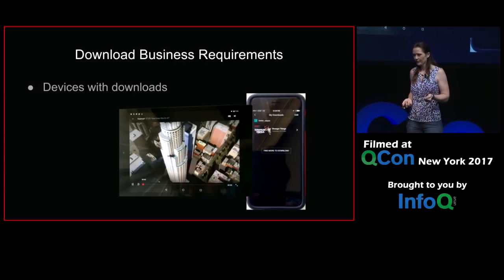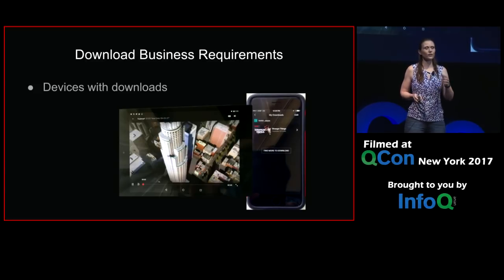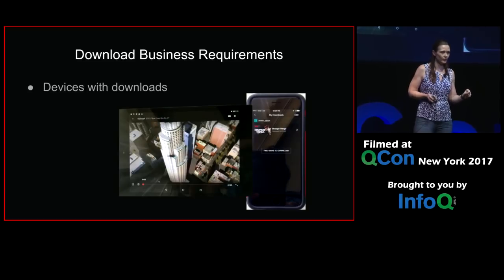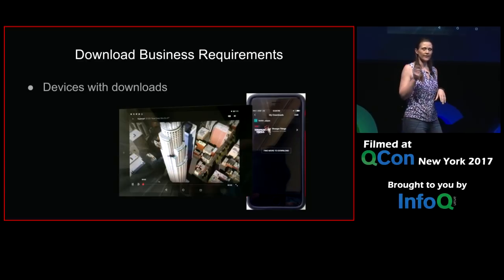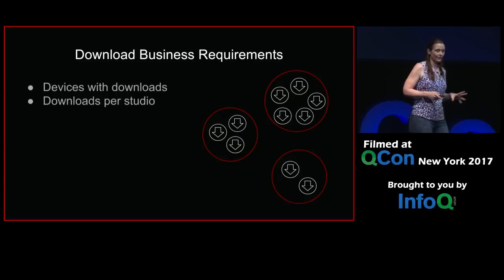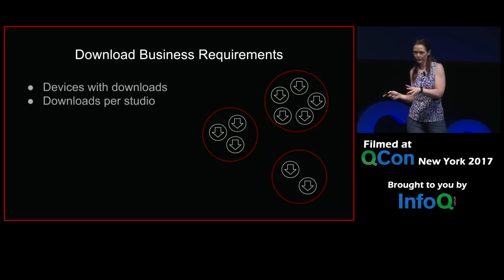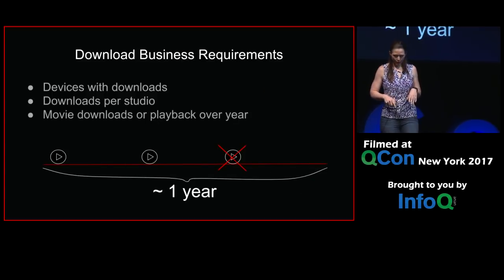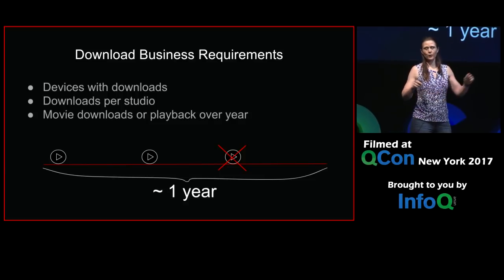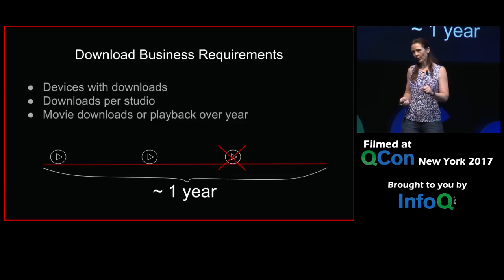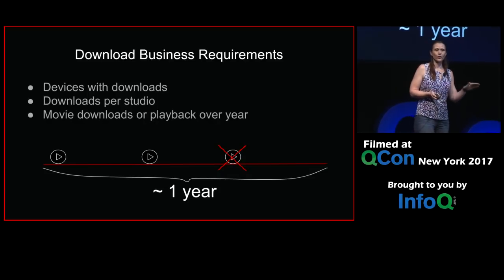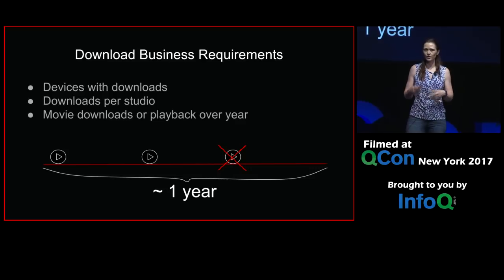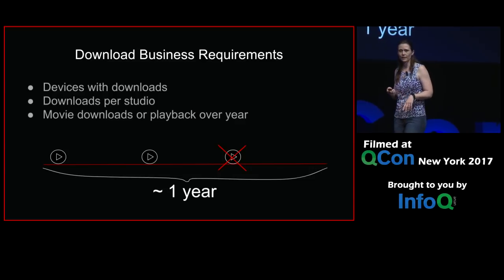One requirement is that you're only allowed to have a certain number of devices with downloads on them at any point in time. This means we need to keep track of what devices a customer has and what downloads are on each device. Secondly, you're only potentially allowed to have a certain number of downloads per studio category, and that number can change depending on studio negotiations. Thirdly — this one's interesting — over the course of a year, you might only be able to download or watch a certain piece of content twice in the year. We need to keep track of what content you've watched, how many times, and if there are restrictions, potentially produce a validation error on the third attempt.